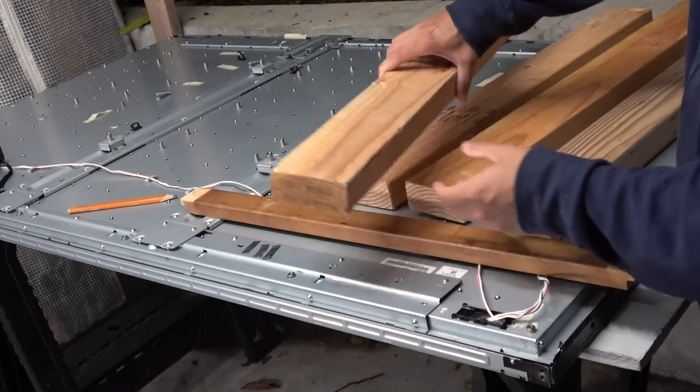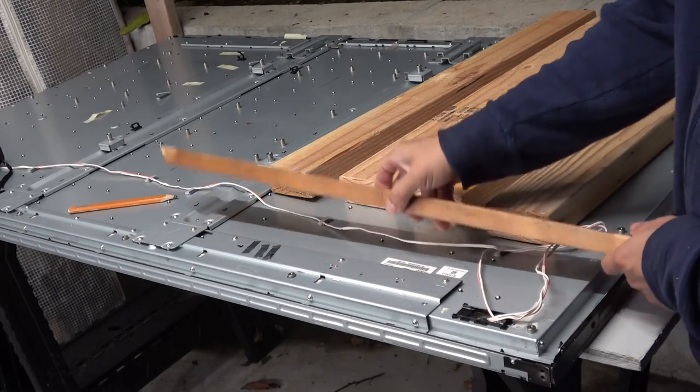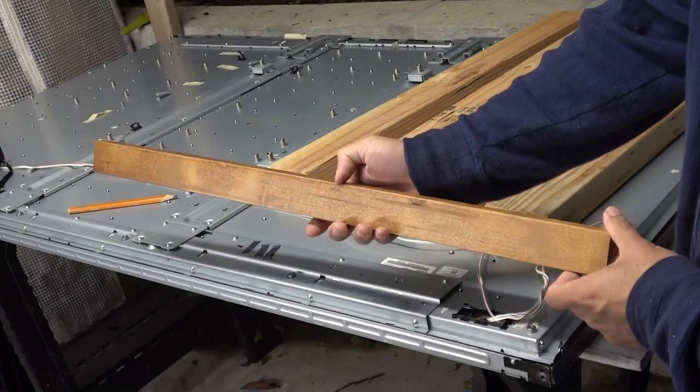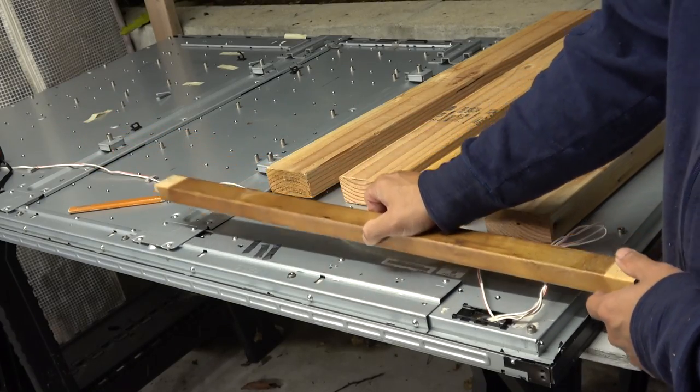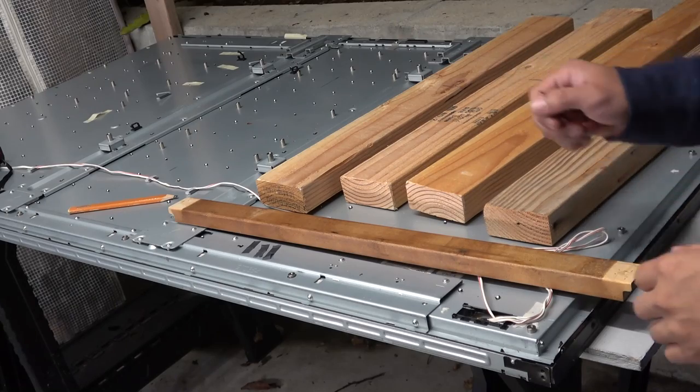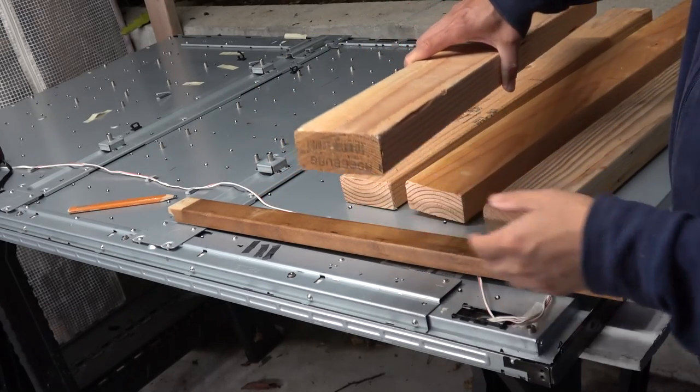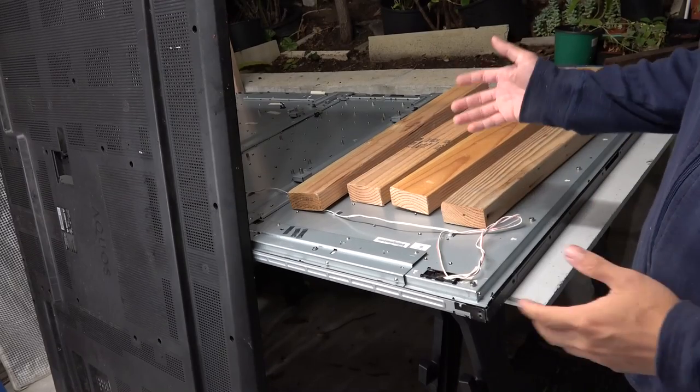If you have a smaller TV or lighter TV, a thinner and smaller piece of wood would do just fine. But because this TV is quite big and heavy, I want to use something that is more heavy duty. It's always better be safe than sorry.